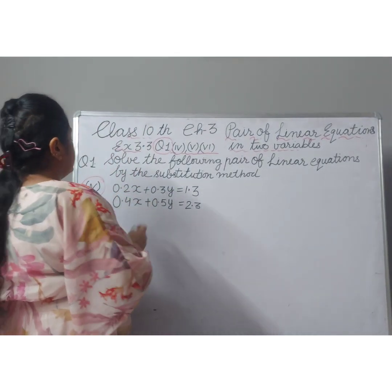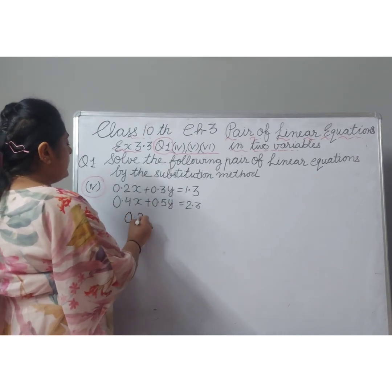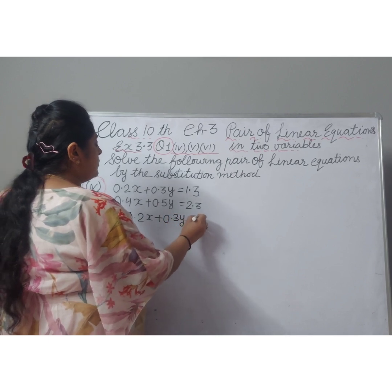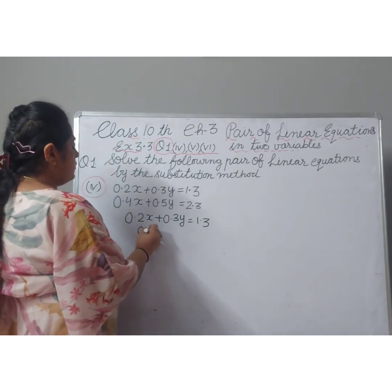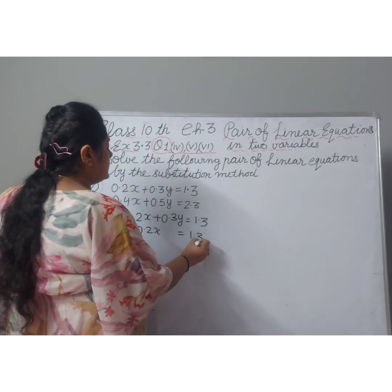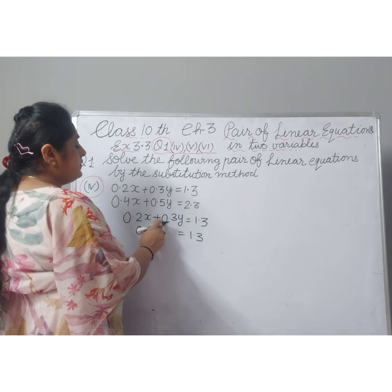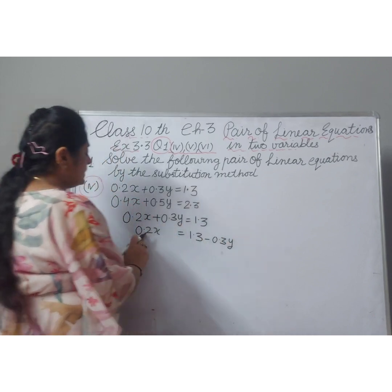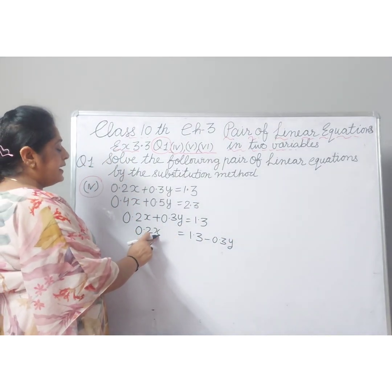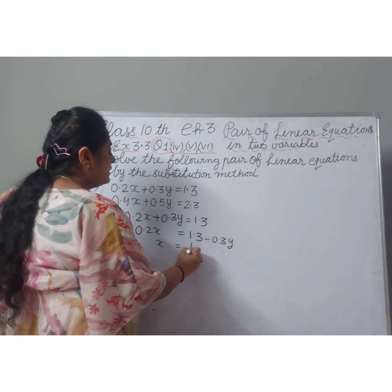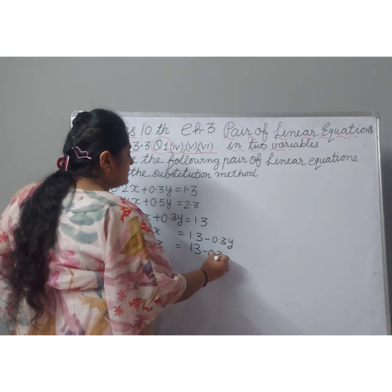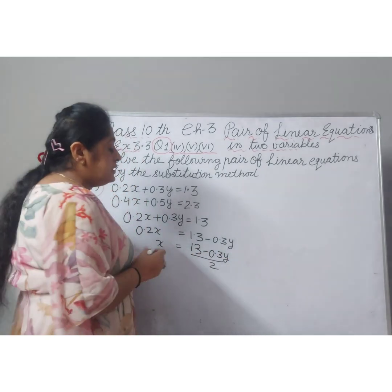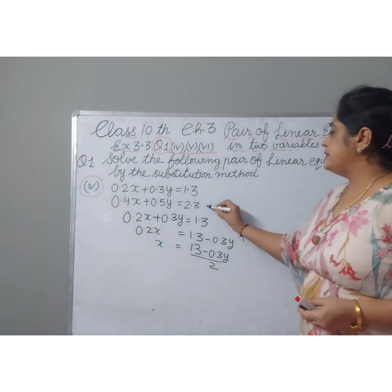Our first equation is: 0.2x plus 0.3y equal to 1.3. From this, 0.2x equals 1.3 minus 0.3y, since 0.3y is positive and moves to the right side with a negative sign. Here, 0.2 is multiplied by variable x, so it will be divided. This gives us the value of x.